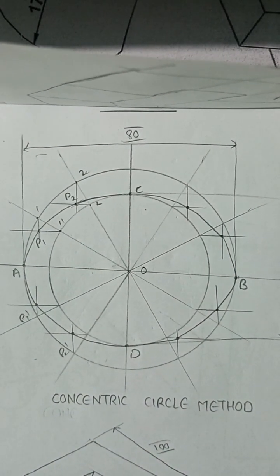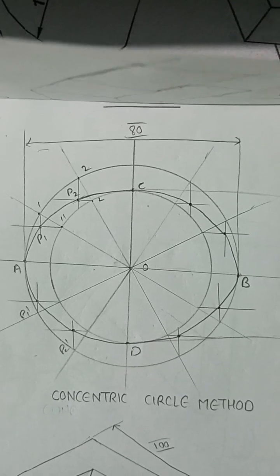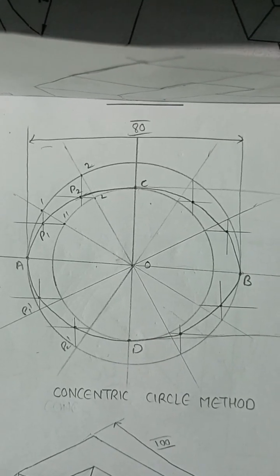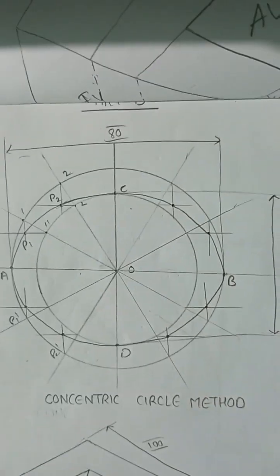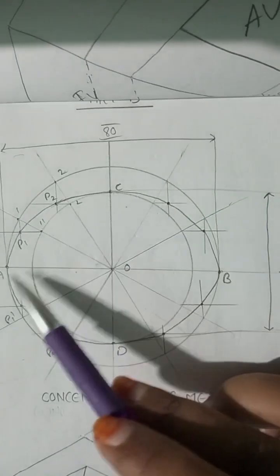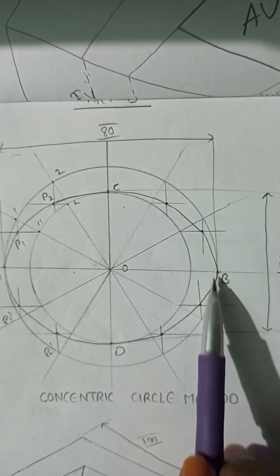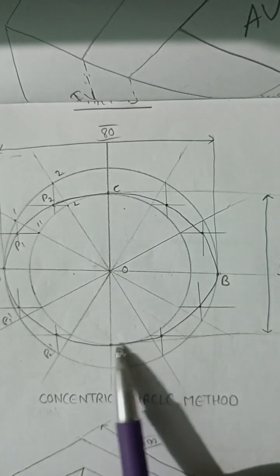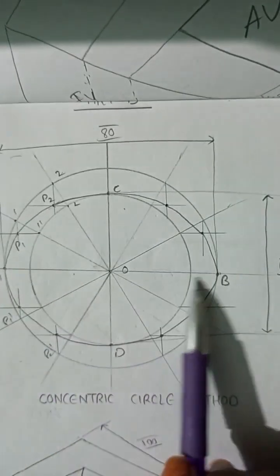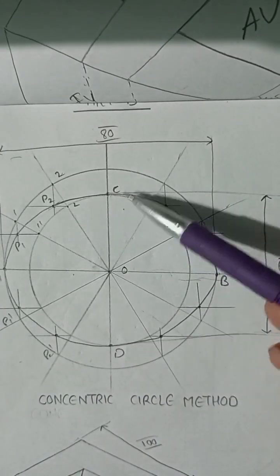I have already drawn the ellipse using the concentric circles method. We can see the darker part in between the two circles — this is what is called an ellipse, with the major axis AB and minor axis CD.